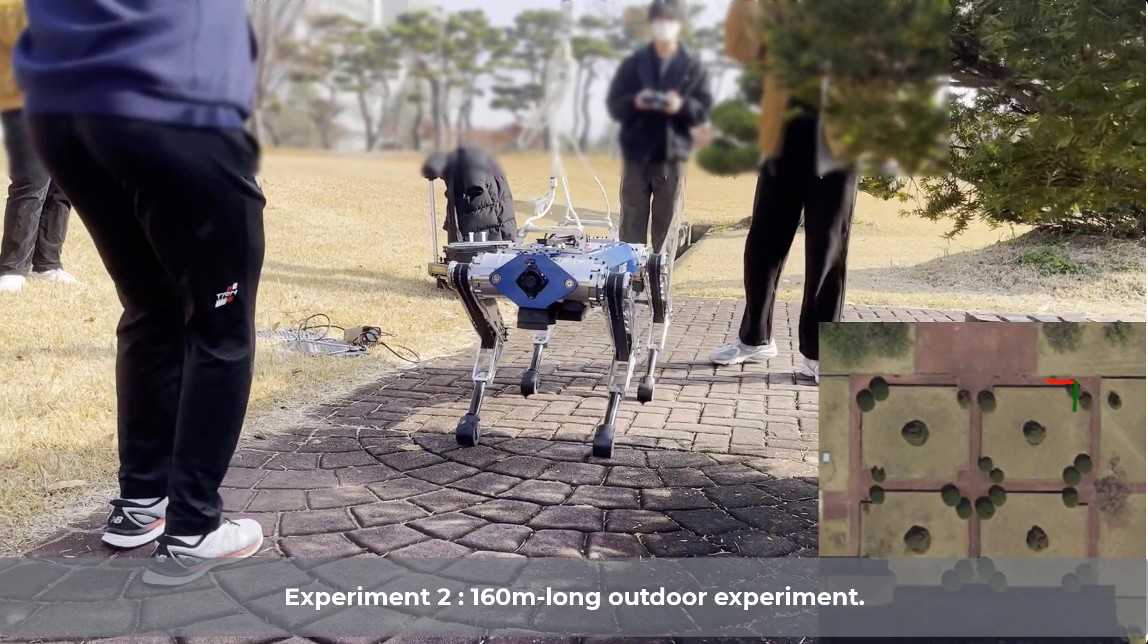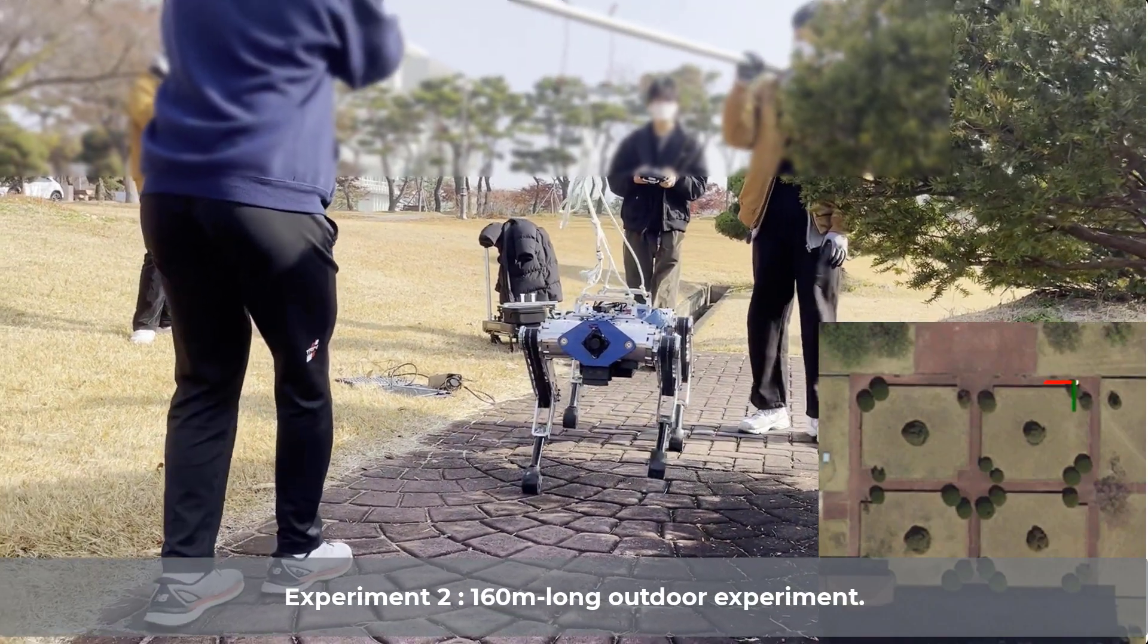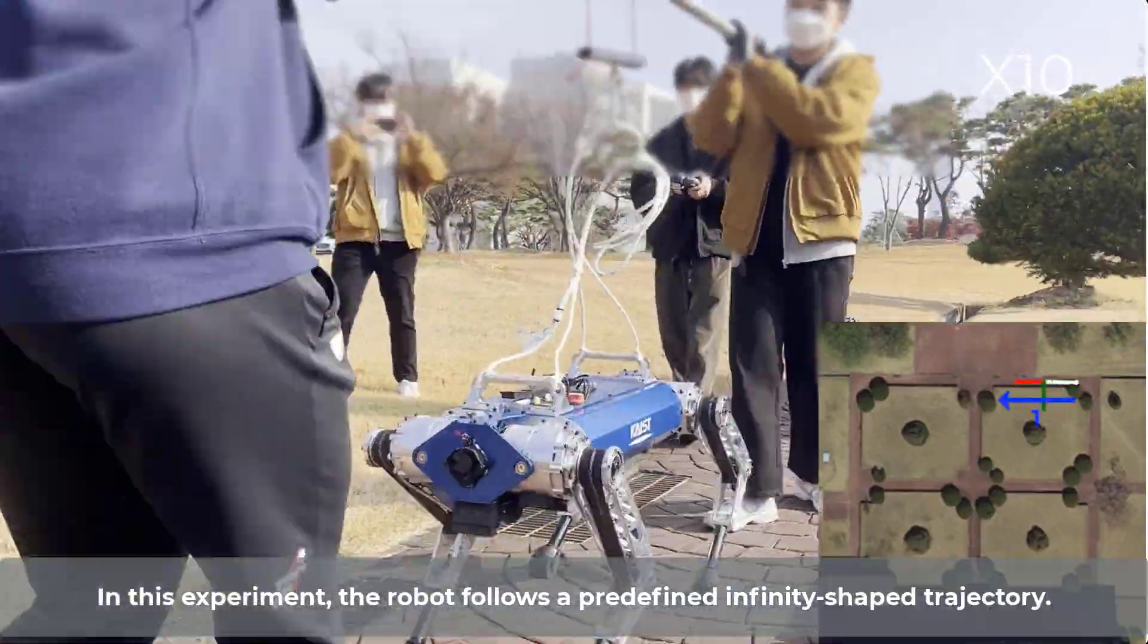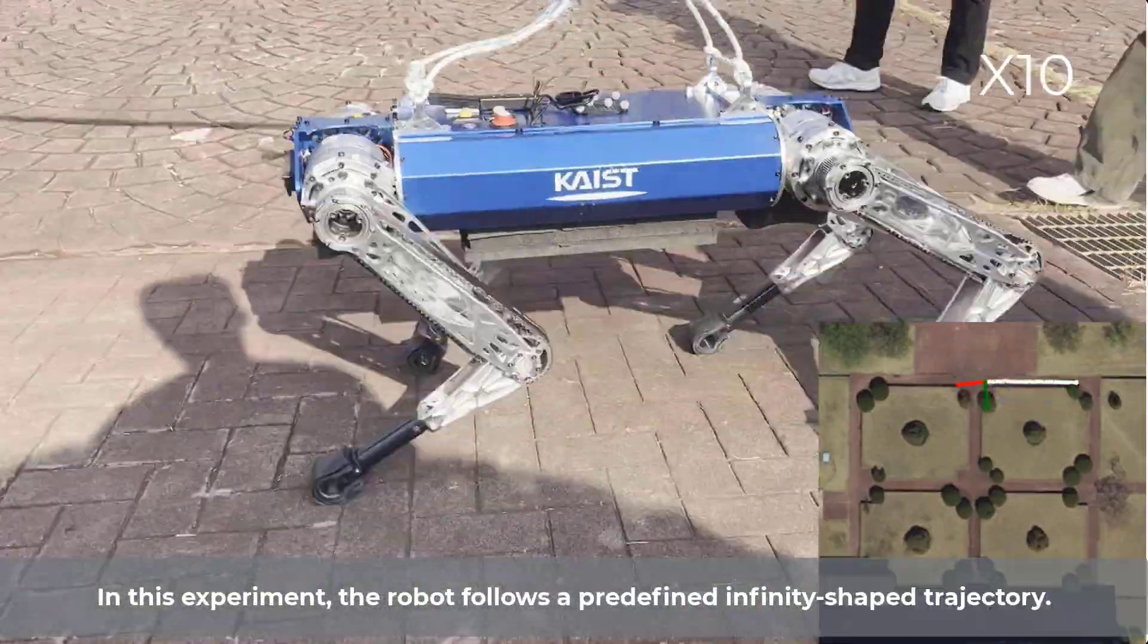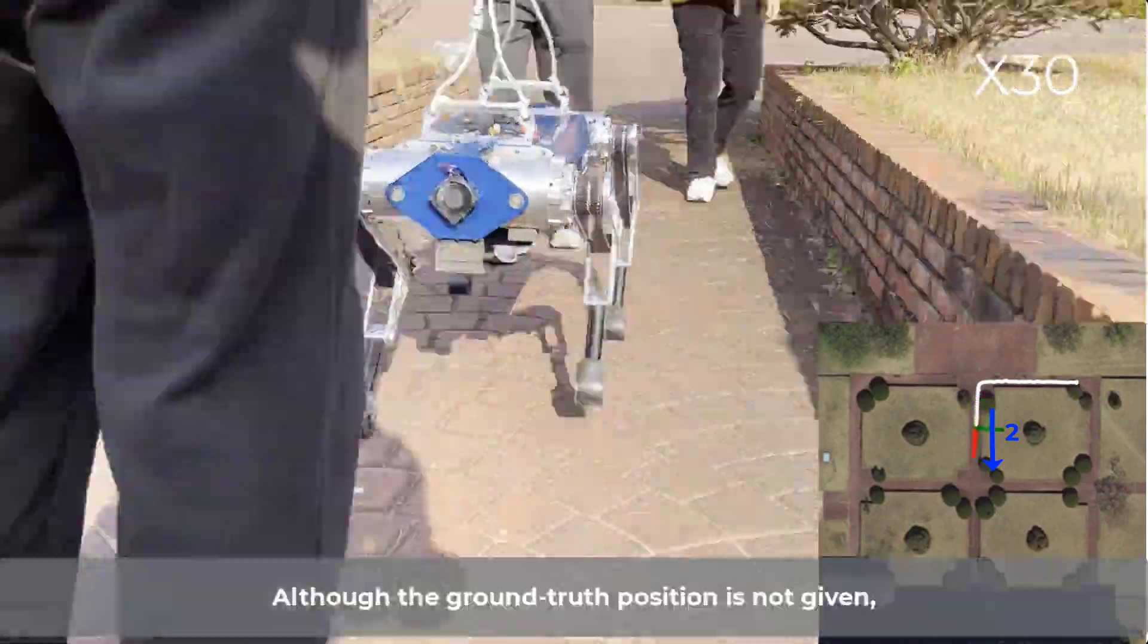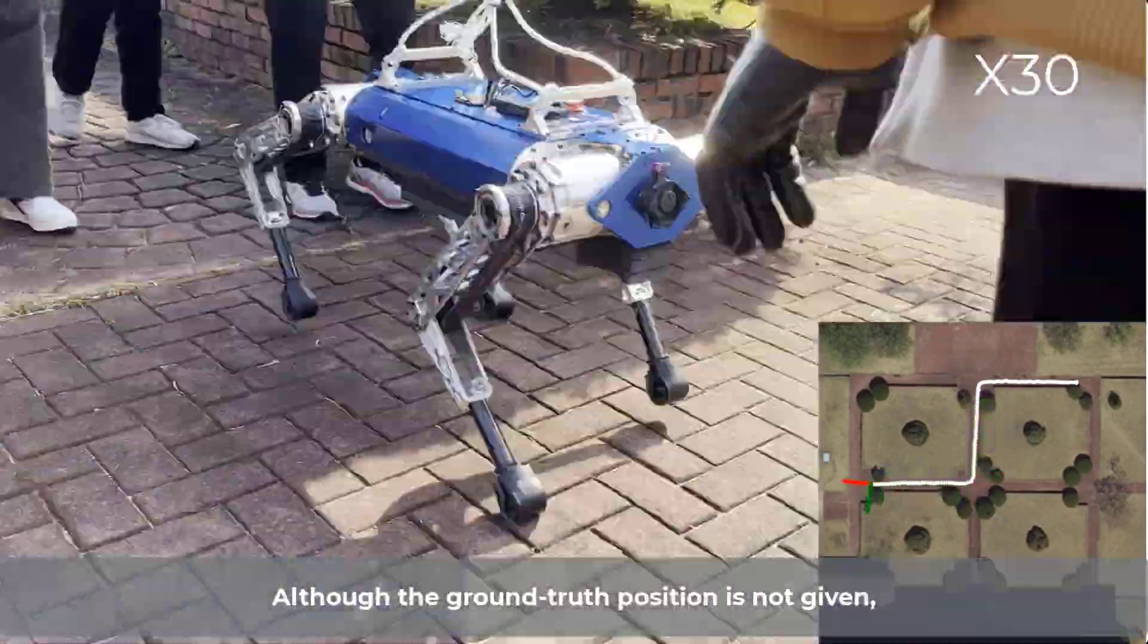Experiment 2. 160 meters long outdoor experiment. In this experiment, the robot follows a predefined infinity-shaped trajectory. Although the ground truth position is not given,